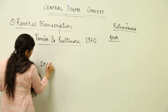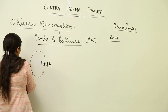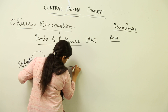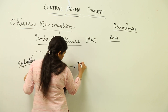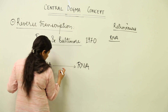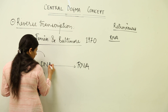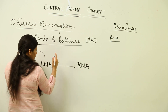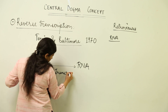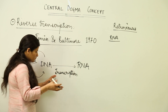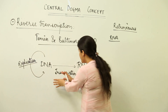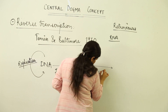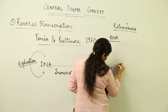Let us revise what the central dogma was. First, DNA is the self-replicating molecule — it forms itself by the process of replication. Then it forms RNA; if you remember how it was formed — it was by the process of transcription. This DNA gets transcribed to form RNA, and later this RNA was further translated into the language of codons to form proteins.